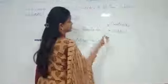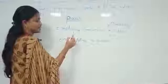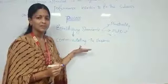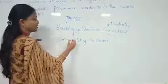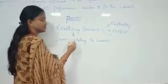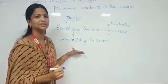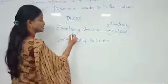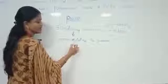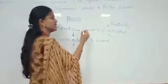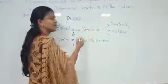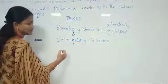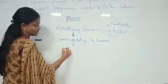After establishing the standards, these standards should be communicated to the employees. Once the establishment of standards is over, organizations use formal communication to communicate these expectations and standards to employees. Once the employees know the standards, they start working towards reaching them. After communicating the standards, the next step is measuring performance.